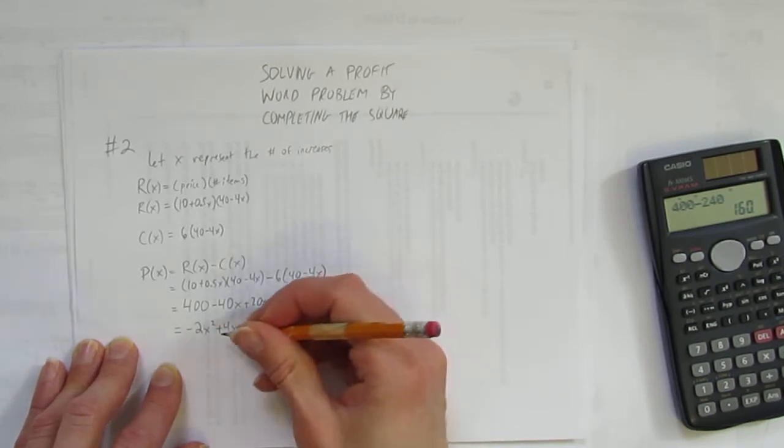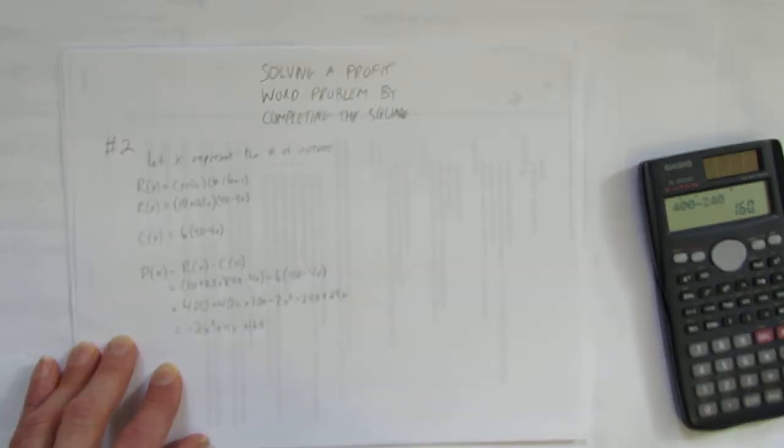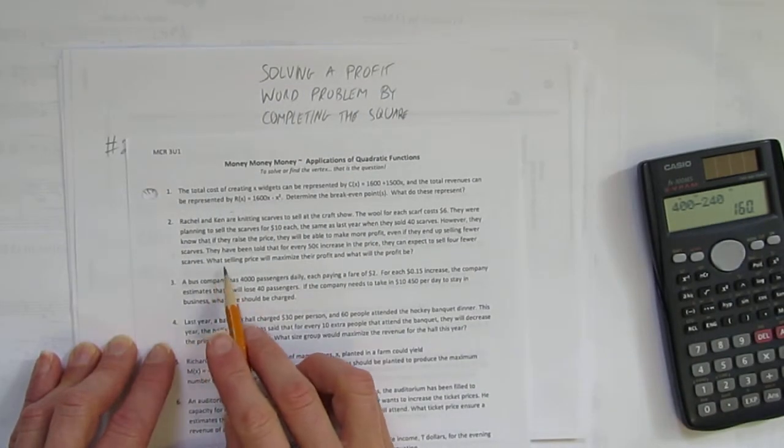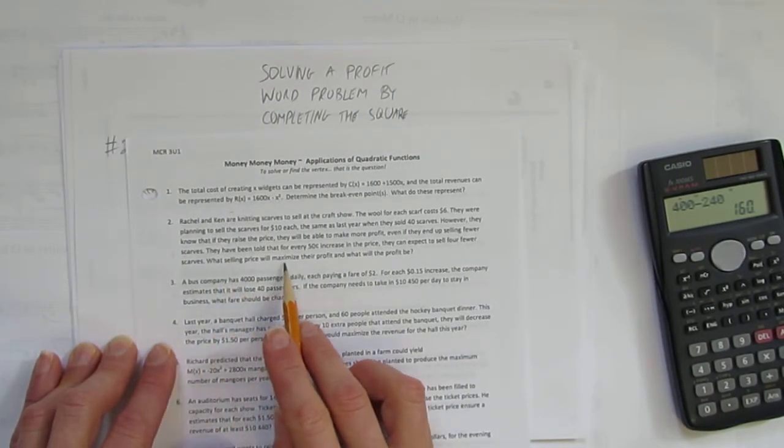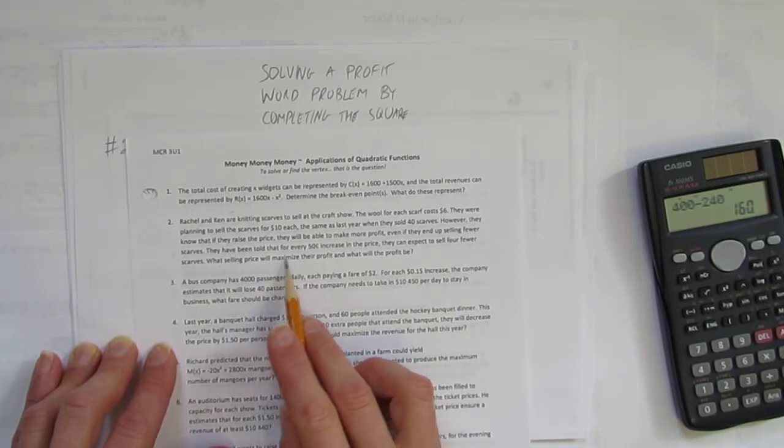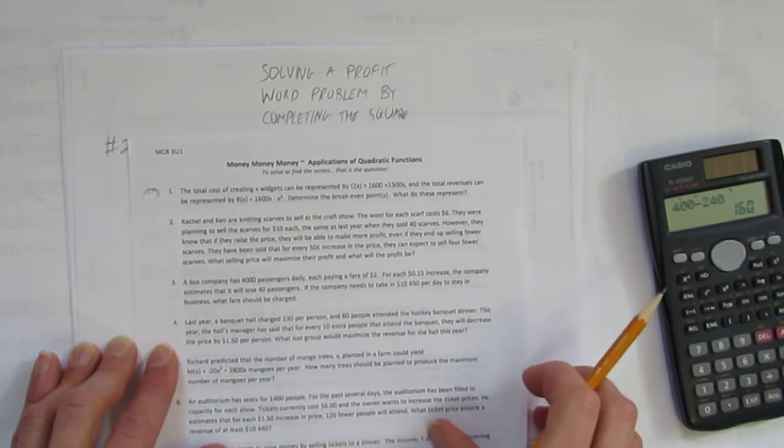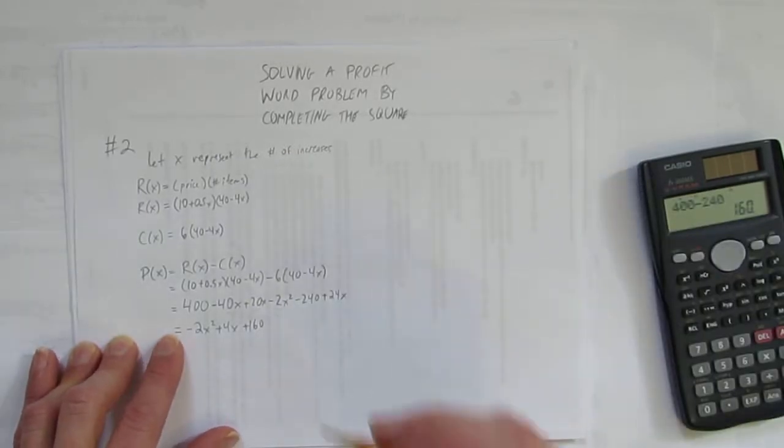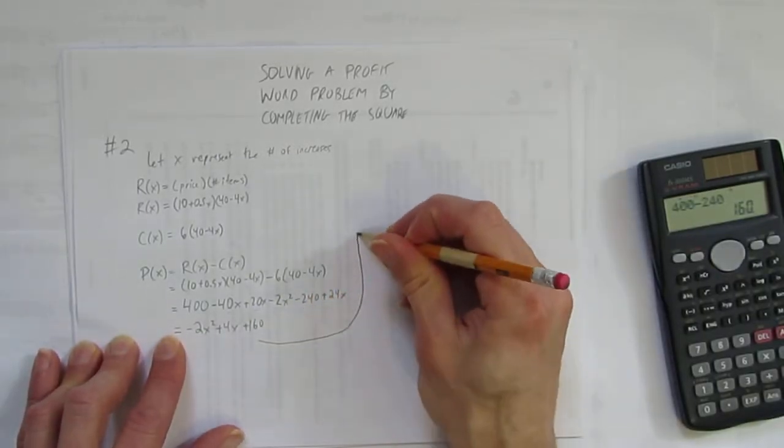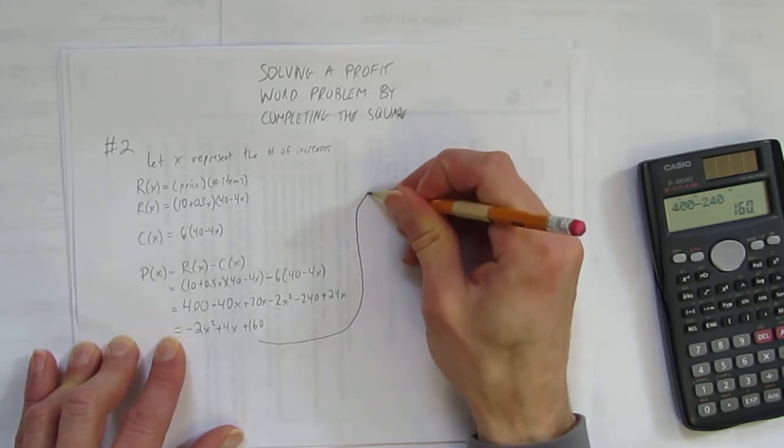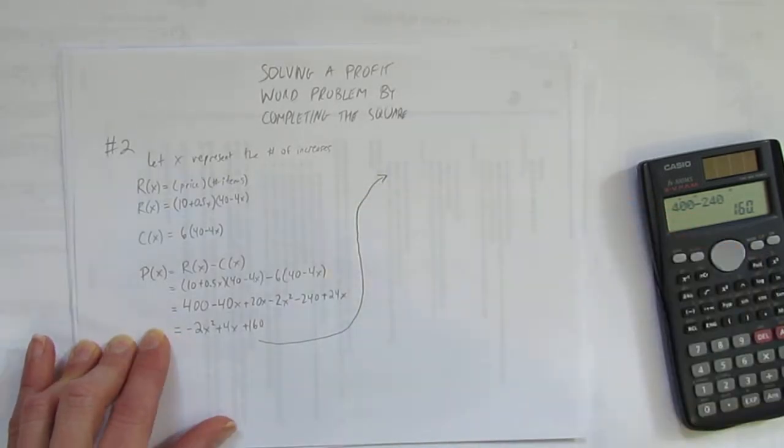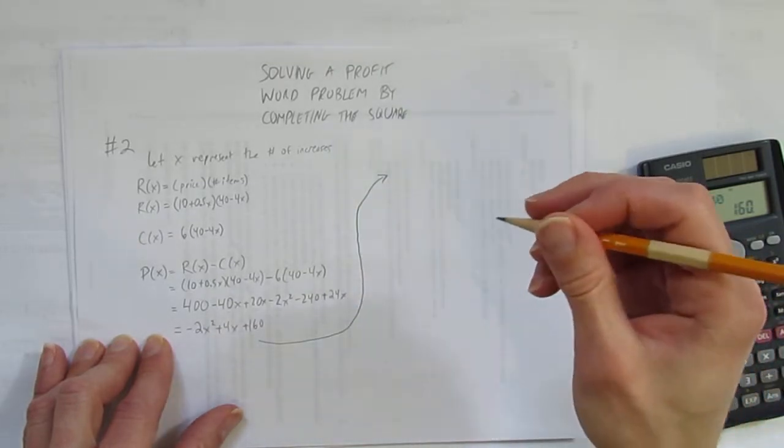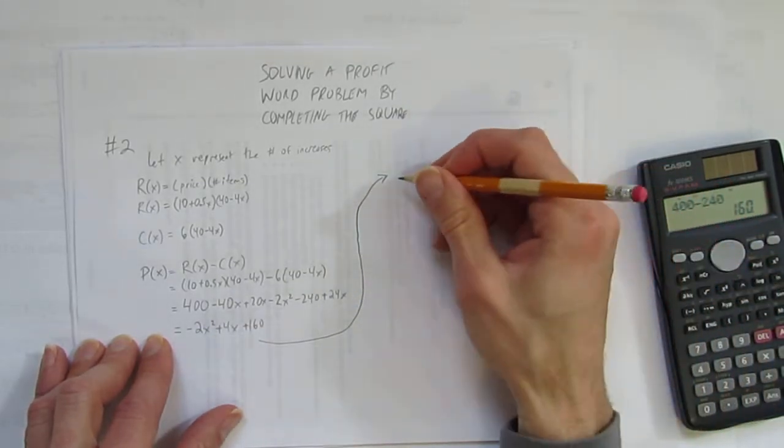So I have a parabola now for profit, negative 2x squared plus 4x plus 160. And if you remember the question, here it is, number two, it's asking us, what is the selling price that will maximize? When I see that word maximize, I know it means the maximum, which means I need the vertex, which means complete the square. There are videos, in particular, there's one really good video on how to complete the square. Please watch that if you're not sure what I'm doing now.